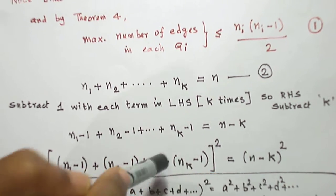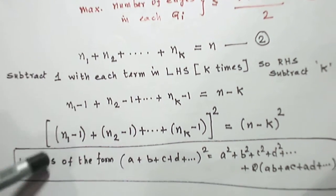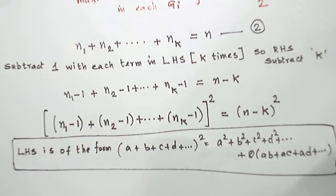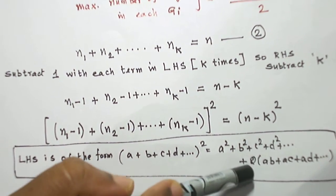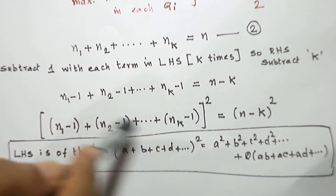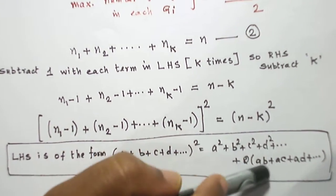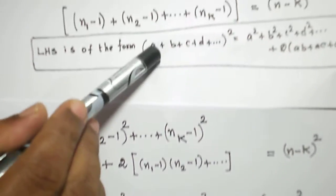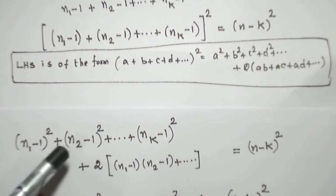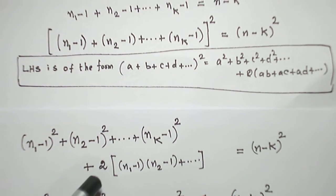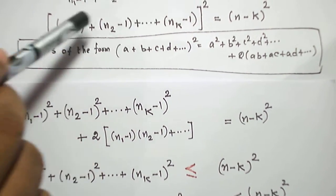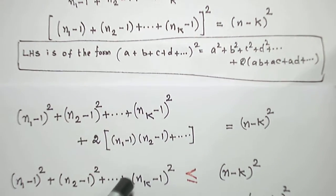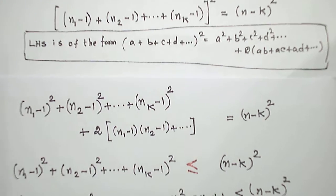Now I square both sides. The left-hand side is of the form (a + b + c + ...)², which expands to a² + b² + c² + ... + 2(ab + ac + ad + bc + bd + ...) — all pairwise products with factor 2. Applying this, I write: (n1-1)² + (n2-1)² + ... + (nk-1)² + 2·Σ(ni-1)(nj-1) = (n-k)².